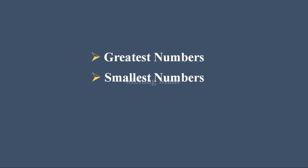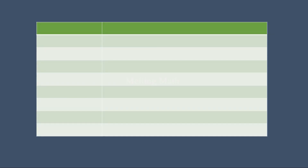Before going to see about greatest and smallest numbers, we need to know how to write some numbers in words. First, how can you write 10? Just write 1 then write 0, so 10 has 1 zero. Next, how can you write 20? Just write 2 then write 0, that is 20.